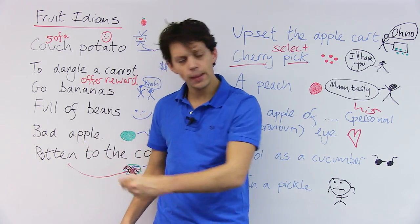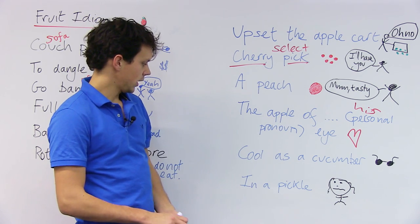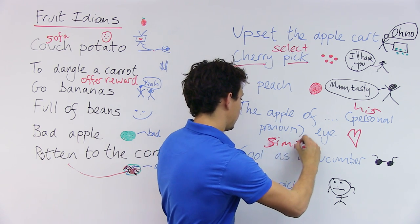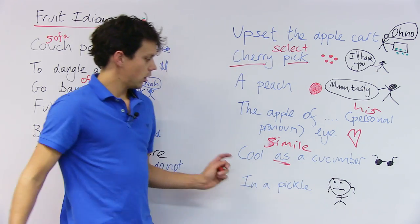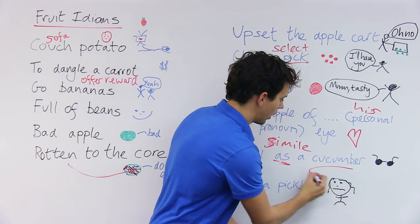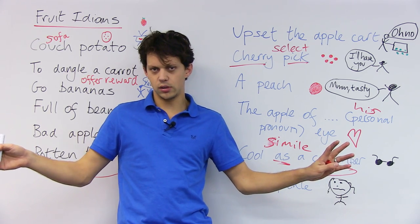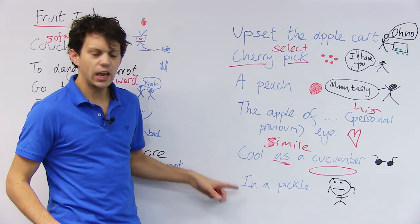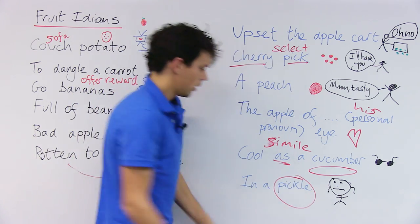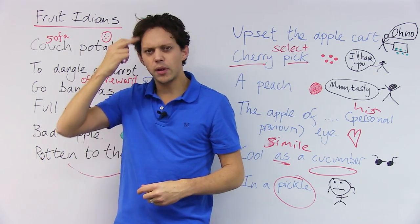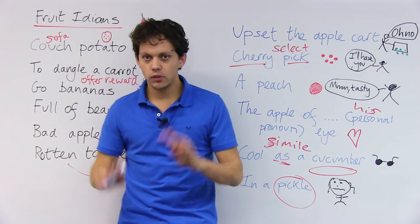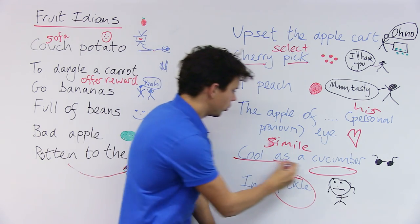You just need to be as cool as a cucumber. Cool as a cucumber is a simile because it uses 'as.' I want him to be as calm, as cool, as refreshing as the cucumber. The cucumber just sits there and gets eaten — Dan just needs to be cool. He cannot be in a pickle — he can't be not knowing what to do. Pickle is like a spicy food, something you'd add to an Indian curry. I don't want Dan in a pickle; I want him cool as a cucumber.